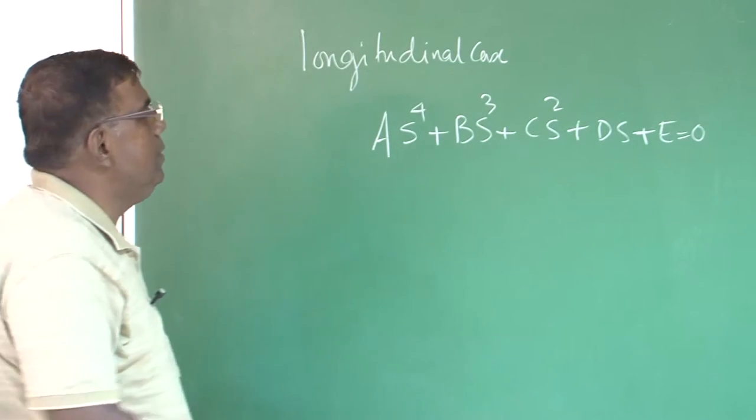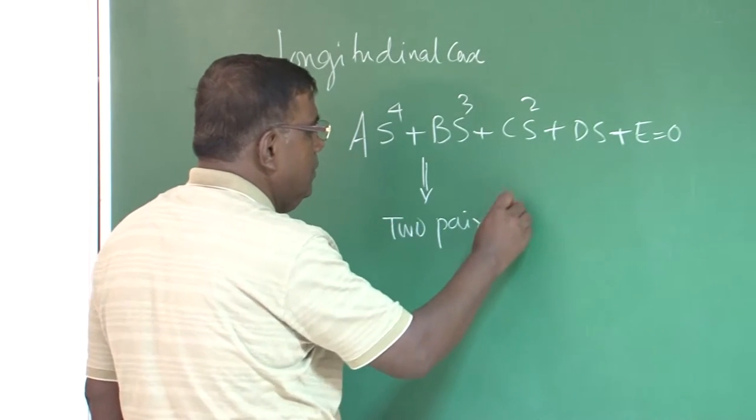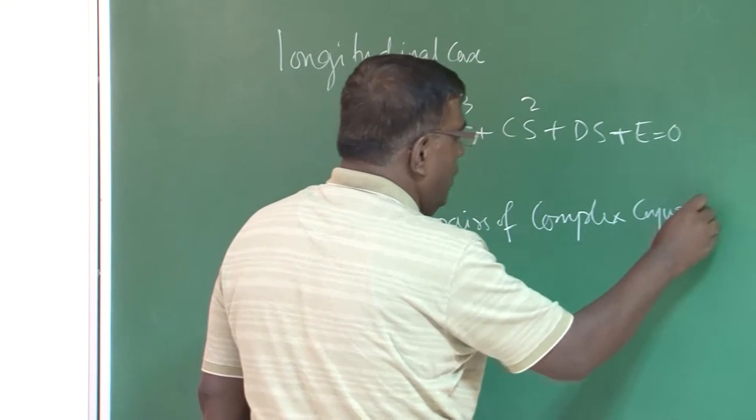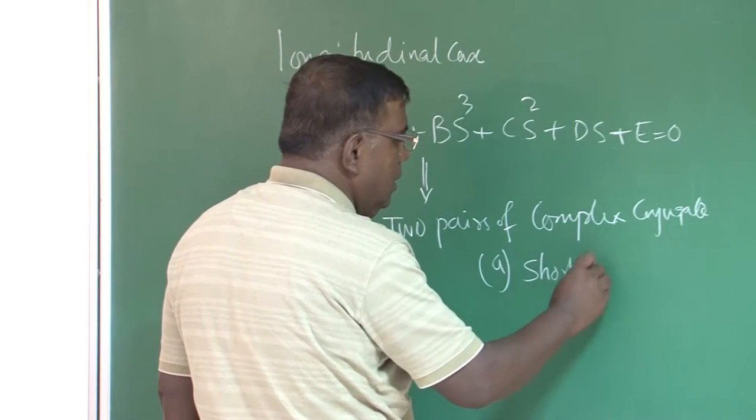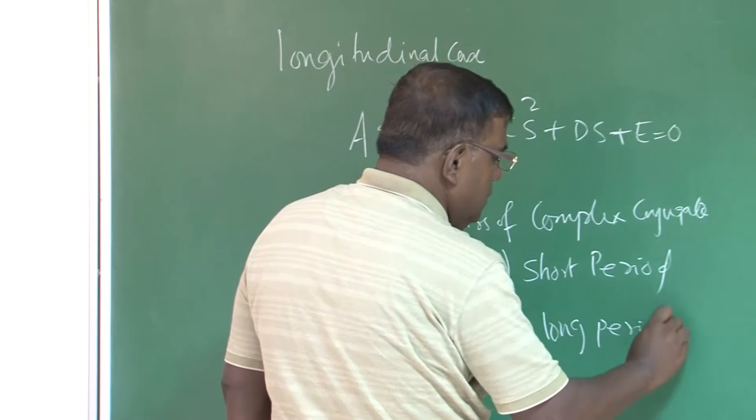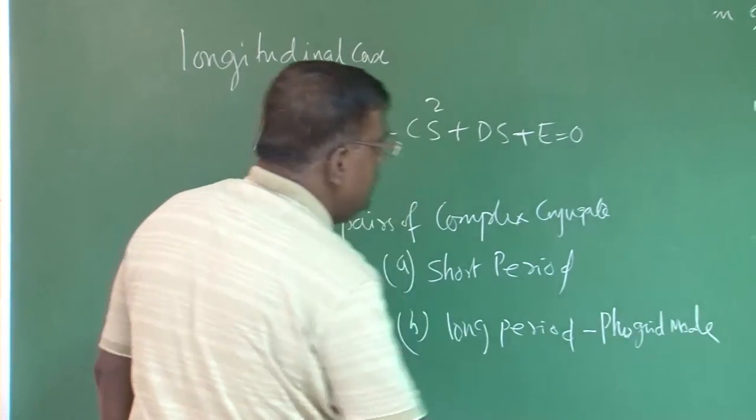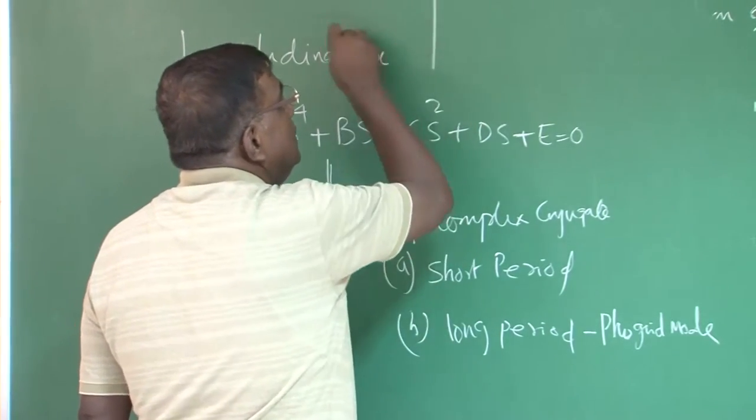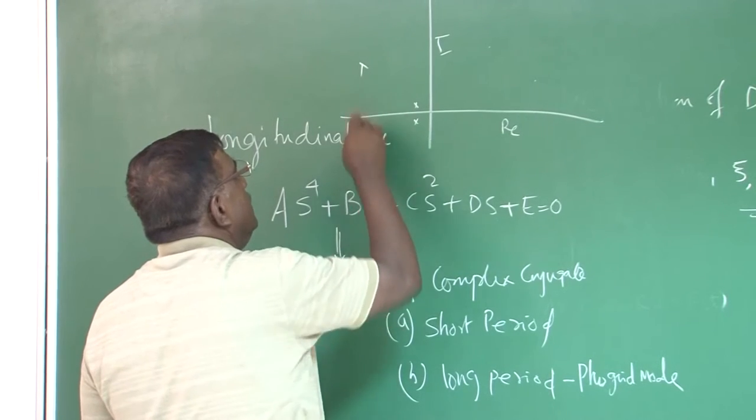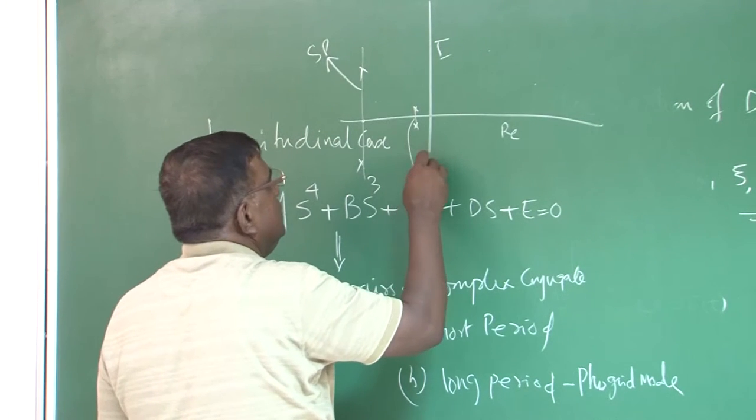More important thing here is, for most of that plane, we found this generates for longitudinal two pairs of complex conjugate and one we identified as short period, another long period, this is also called phugoid mode. So if I try to display the roots in imaginary and real coordinate system, you will find one root is here, one complex pair is here. This is large negative, this belongs to short period and this pair belongs to phugoid.